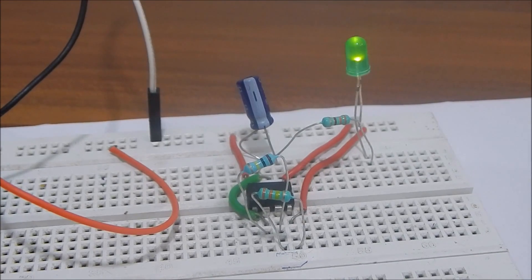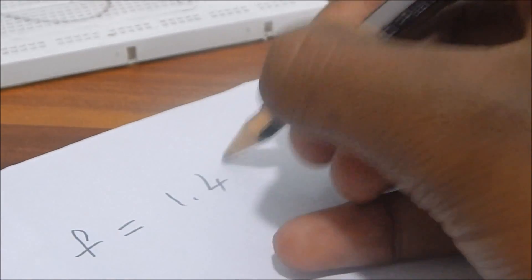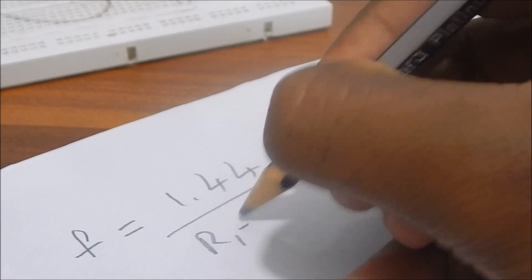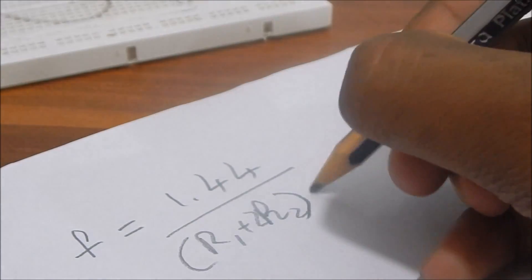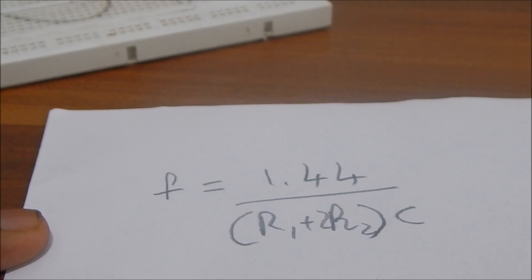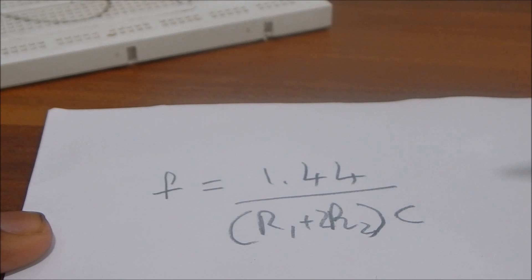Here comes the mathematics and the formulation. The formula for the Astable Multivibrator is: frequency equals 1.44 divided by (R1 plus 2R2) times C. This is the formula to calculate the time period.